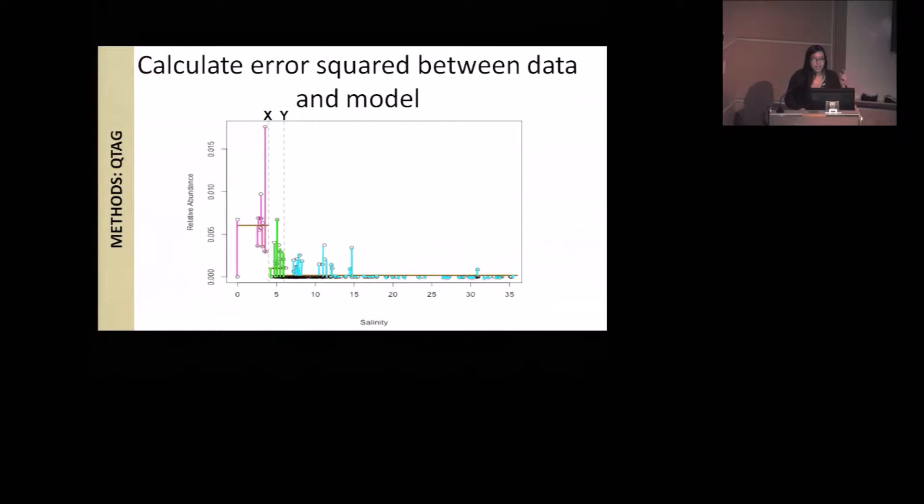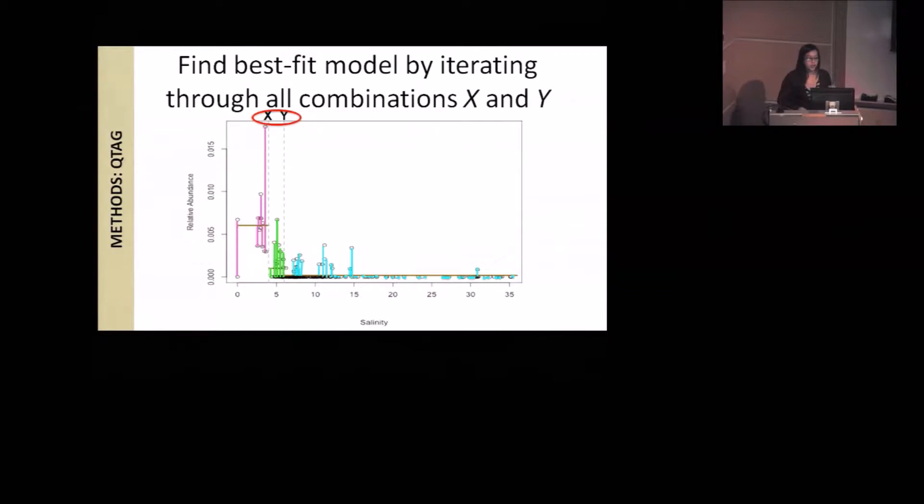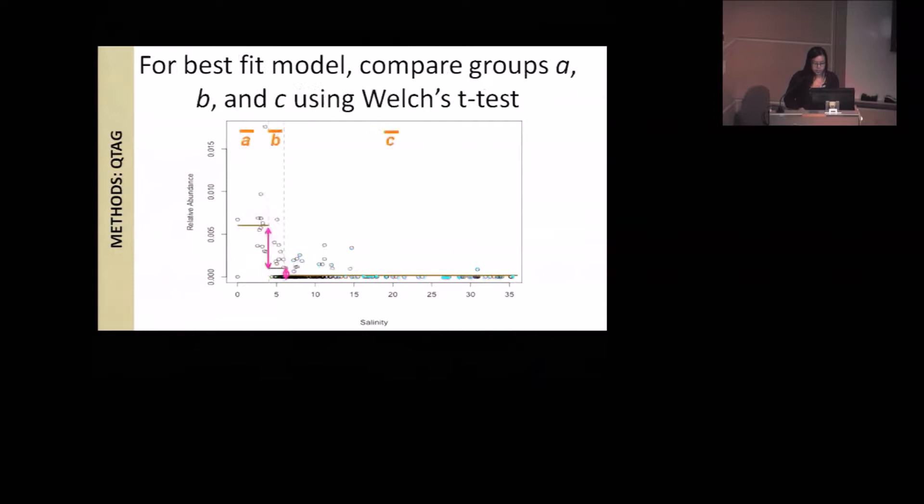As it iterates through all combinations of X and Y, it finds the best fit model. So the combination of X and Y that yields the means A, B, and C that best fit the shape of the data. In this example, this is actually the best fit model it found. You can see that it mimics the shape of the data. It goes from high abundance to low abundance. Once it finds the best fit model, then it compares the means A, B, and C as well as how significantly different they are from each other to determine what kind of specialist it is.